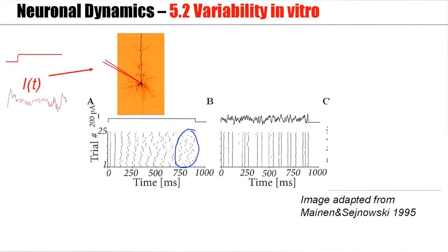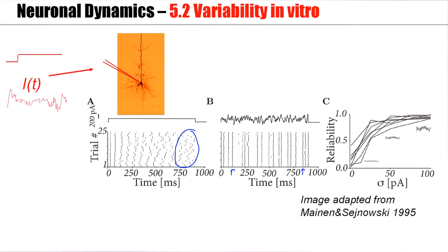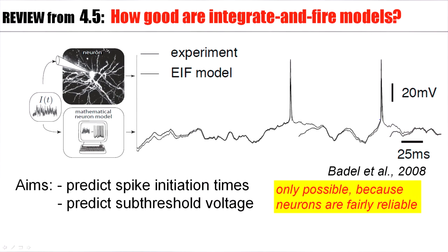On the other hand, if you inject a strongly fluctuating current into the same neuron, then you see that all spikes occur fairly reliably. So if you increase the size of the fluctuations, so the size of the fluctuations is sigma, if you increase sigma, then the reliability increases as well. And already for a fairly small amount of fluctuations, the neuron is quite reliable. Thus, neurons are fairly reliable.